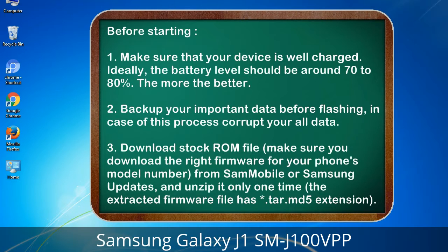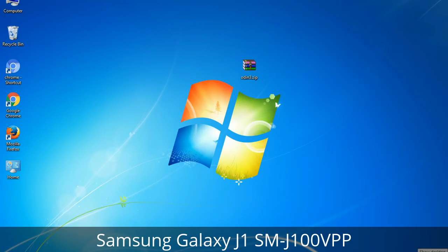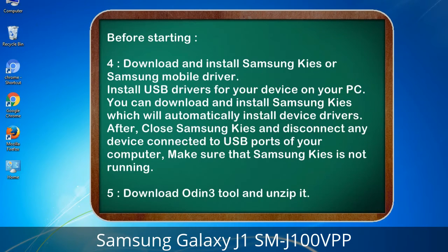3. Download the stock ROM file. Make sure you download the right firmware for your phone's model number from Sammobile or Samsung updates, and unzip it only one time. The extracted firmware file has a *.tar.md5 extension.